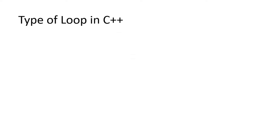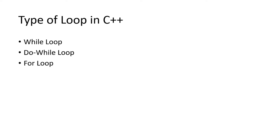Types of loops in C++: kitne prakar ki loop hote hain? While loop hoti hai, do-while loop hoti hai, and for loop hoti hai.